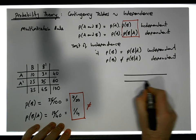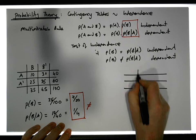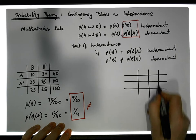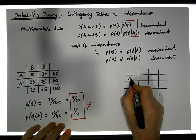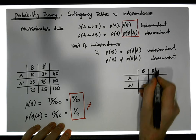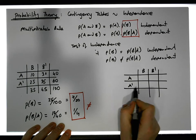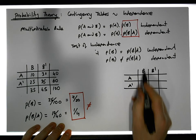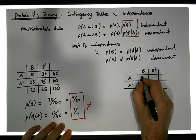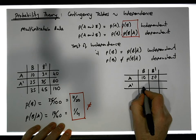That's one situation. Let's look at a different contingency table to illustrate independence. Once again we have A and A-prime, B and B-prime — you either purchase A or you don't, you purchase B or you don't — and let's say we have values 10, 20...